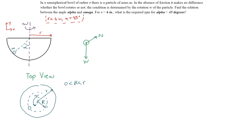Since the centripetal acceleration points along the x-axis, we're going to draw that in the free body diagram as a dashed line — this is not actually a force, but the resultant force due to the weight and the normal force. This is the centripetal acceleration of particle m. The angle alpha in the diagram is right here, which is also alpha in this part of the diagram, so we can use that when we sum forces in the y and x directions.